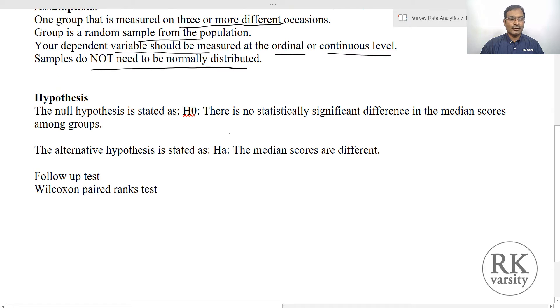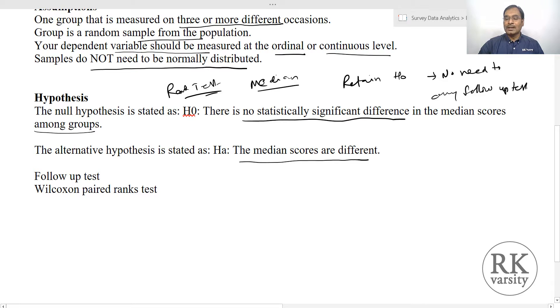In case of Friedman's test, the null hypothesis is that there is no statistically significant difference in the median scores among the groups, because Friedman's is a rank test based on median scores of the responses. The alternative hypothesis is that the median scores are different. If you retain the null hypothesis, there is no need to do any follow-up test. Suppose there are differences and you are rejecting the null hypothesis, then you need to perform a follow-up test to know which two groups are different from others. To run a follow-up test, normally we use a Wilcoxon paired ranks test for two related samples.